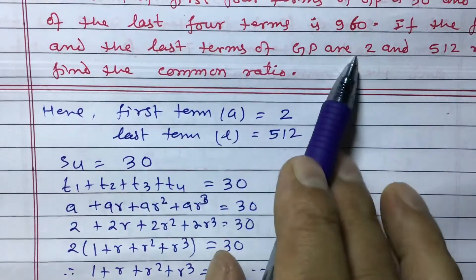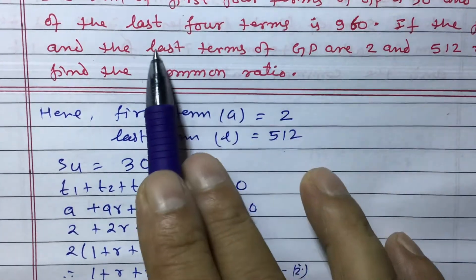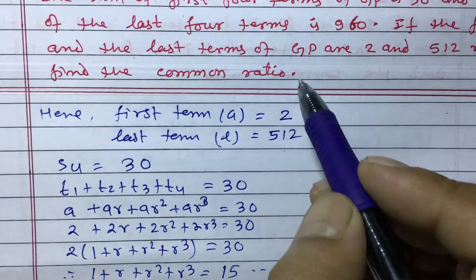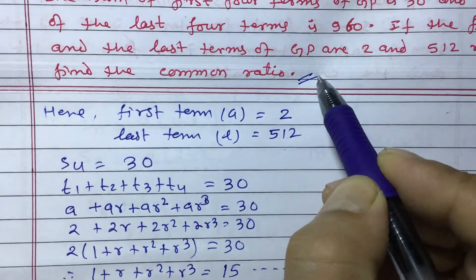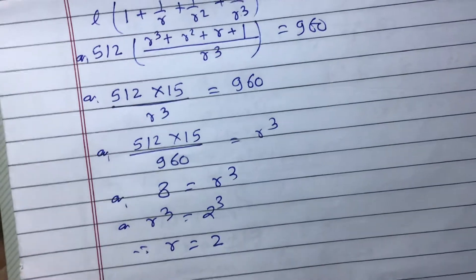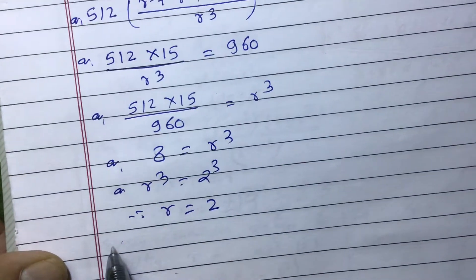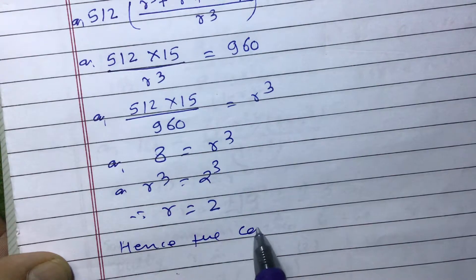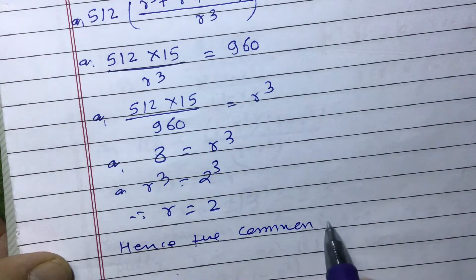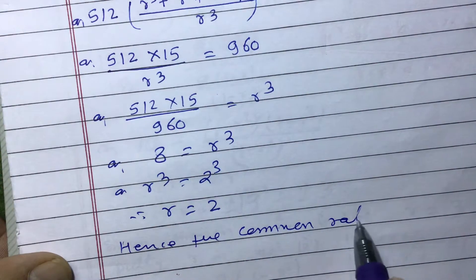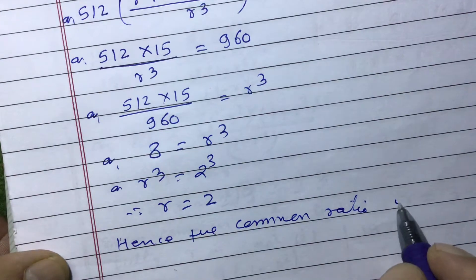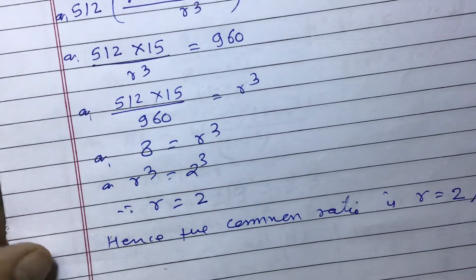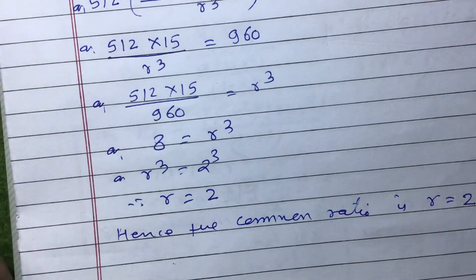We were asked to find the common ratio of the GP, where the first term and last term are 2 and 512 respectively. Hence, we can conclude that the common ratio r equals 2. Thank you for watching this video.